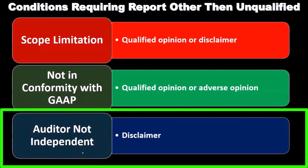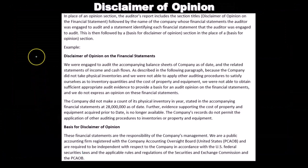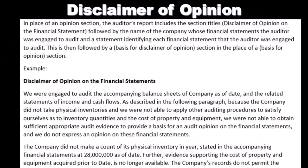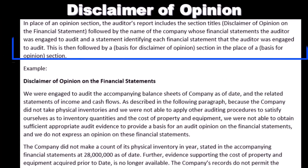If the auditor is not independent, we'd have to issue a disclaimer of opinion, because the auditor can't give an opinion without that independence factor. Here's an example of how the terminology would look on a disclaimer. Remember, you want to memorize the qualified audit report and then think through the deviations. In place of an opinion section, the auditor's report includes a section titled 'Disclaimer of Opinion on the Financial Statements.'